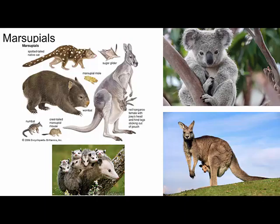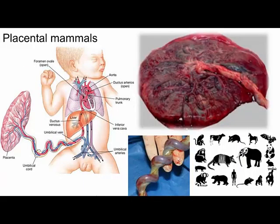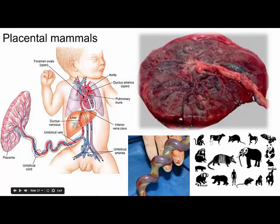The marsupial young are tiny, pink, almost transparent little things. There's a koala as well. Placental mammals — that's what a placenta actually looks like. After a mother gives birth, the placenta comes out afterwards; the mother has to deliver the placenta. It tears away from the wall of the uterus after the baby is born and comes out. The umbilical cord is attached to it; you can see it's sort of a spiral. The placenta grows on the wall of the uterus, and once the baby is born, it tears away and comes out through the vagina.